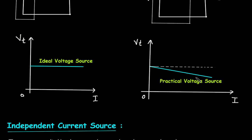But in case of practical voltage source, as the current increases, the terminal voltage Vt is decreasing. Here we can see it is decreasing.